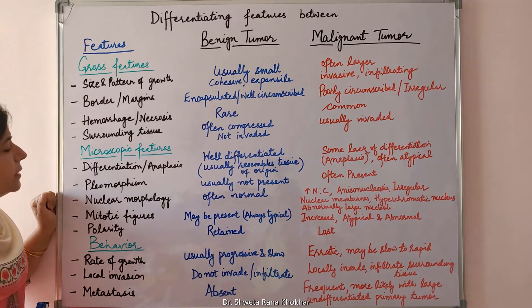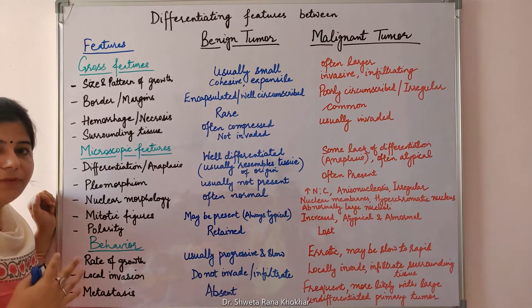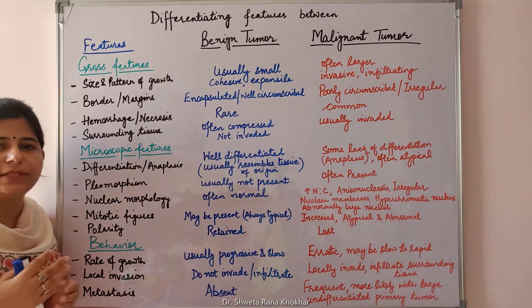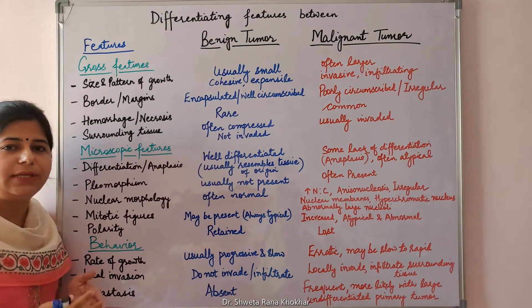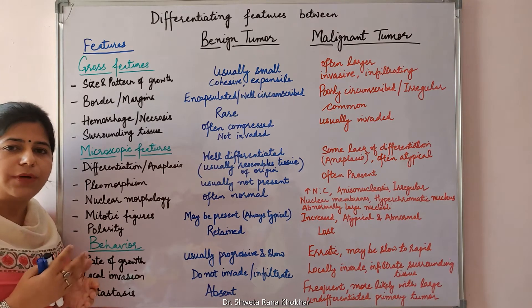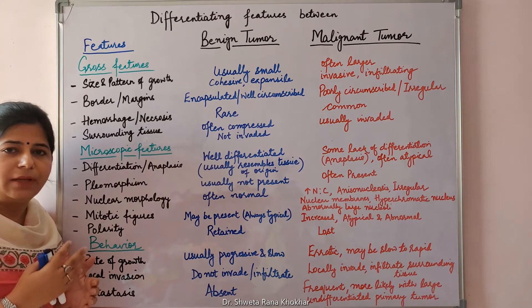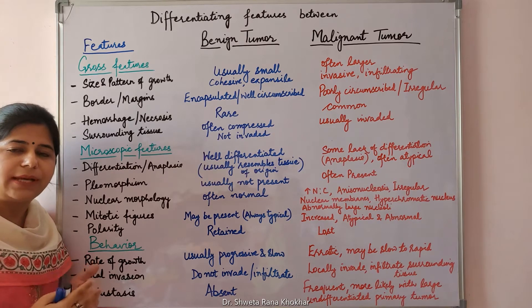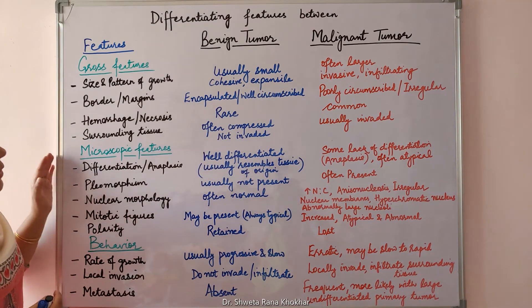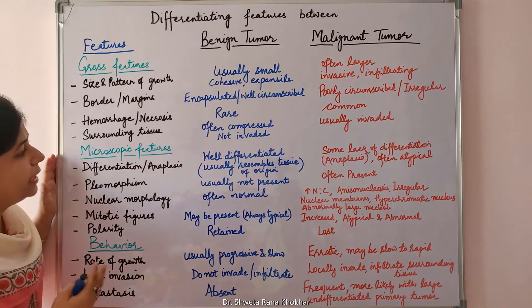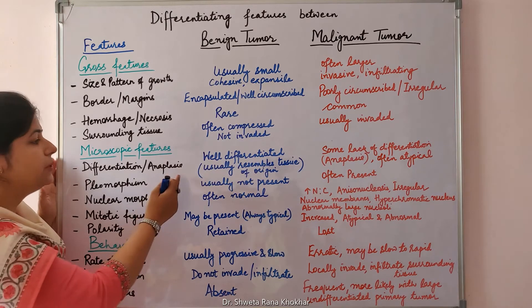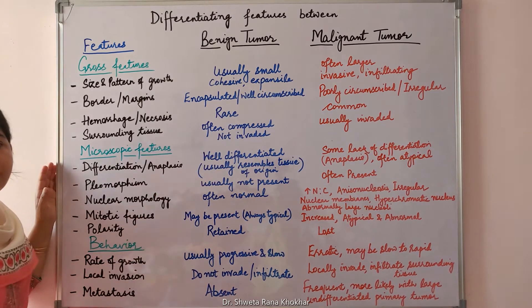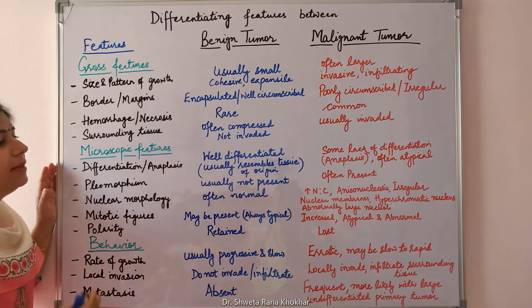Microscopic features: differentiation. What is differentiation? Differentiation is the extent to which the tumor cells resemble the corresponding parenchymal cells, both morphologically as well as functionally. In benign tumors, the tumor cells are well differentiated and they resemble the tissue of origin.